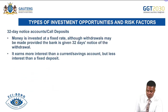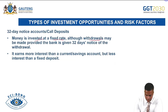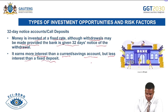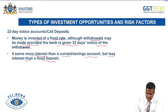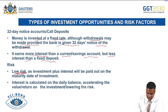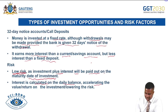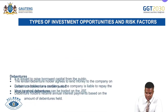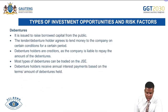The third investment opportunity is a 32-days notice account or call deposit. Money is invested at a fixed rate, although withdrawals may be made provided the bank is given 32 days' notice. It earns more interest than a current or savings account but less interest than a fixed deposit. The risk is very low, as the investment plus interest will be paid out on the maturity date, and interest is calculated on a daily balance, accelerating the return on investment.